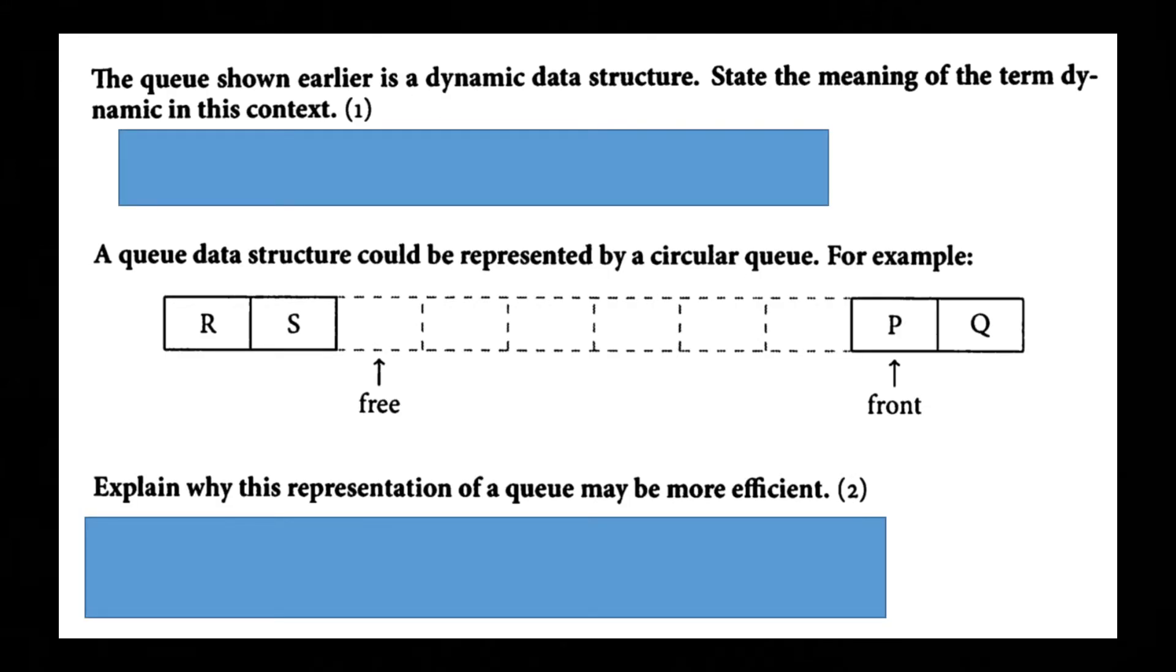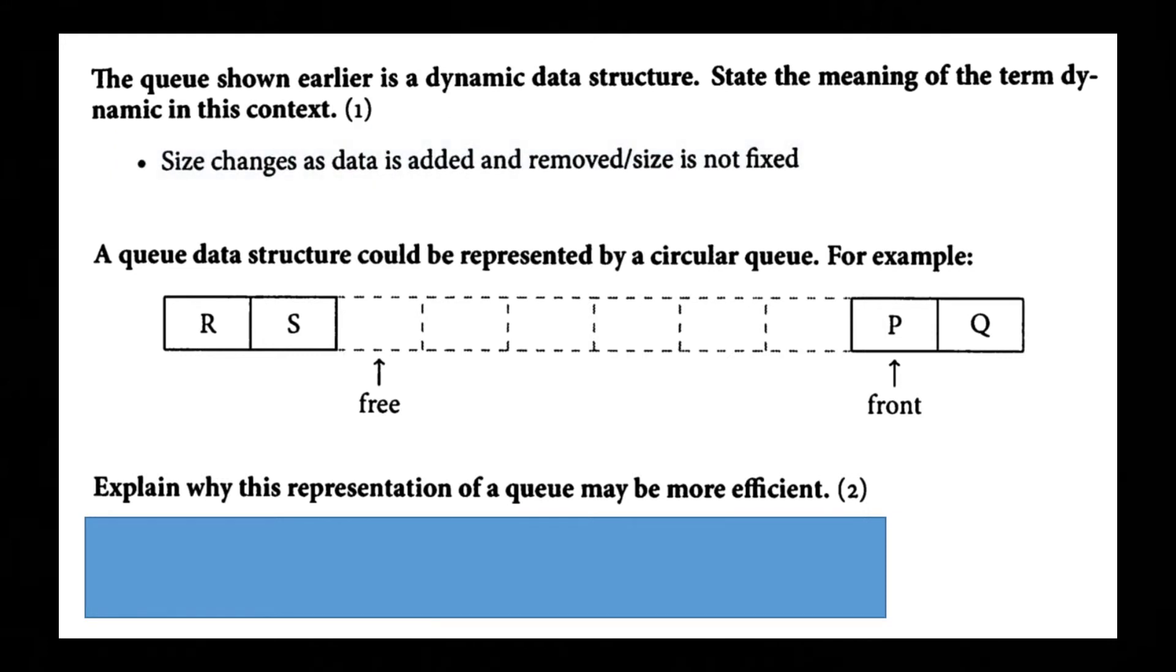The queue shown earlier is a dynamic data structure. State the meaning of the term dynamic in this context. So this question has actually come up. So term dynamic is size changes as data is added and removed so the size is not fixed.